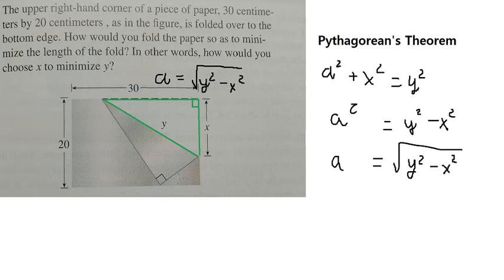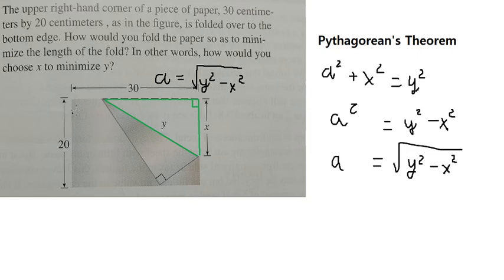The value of s here will be the same as the value of s here, because we just fold the paper from this one to this one. So we have s here, and the other value is a. So we have the square root of y² minus s².